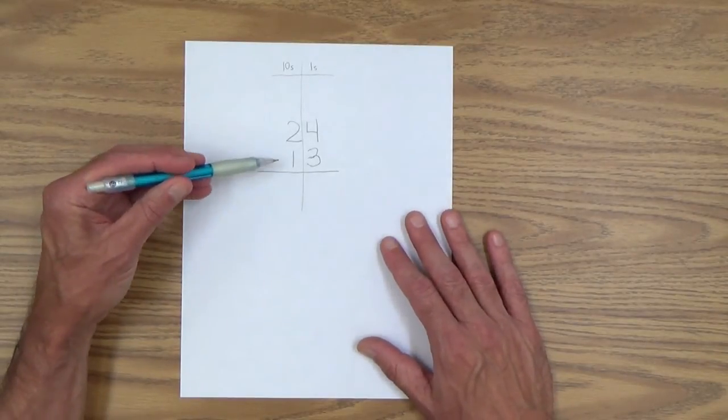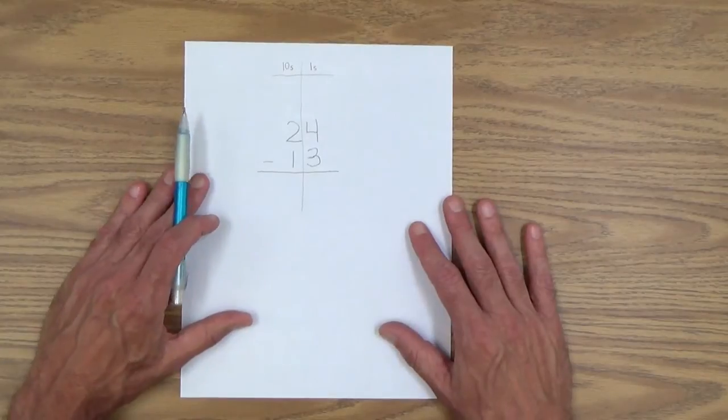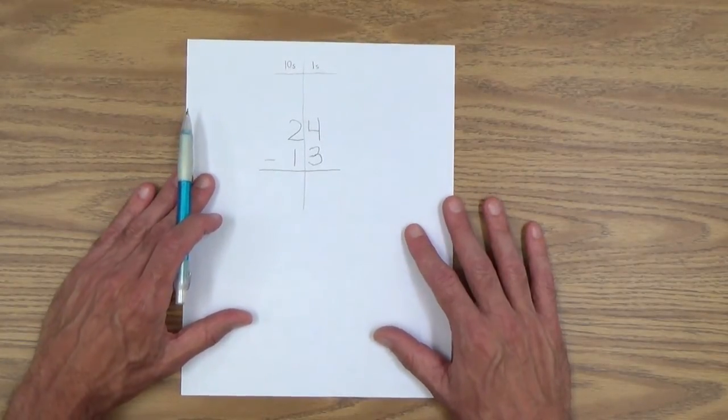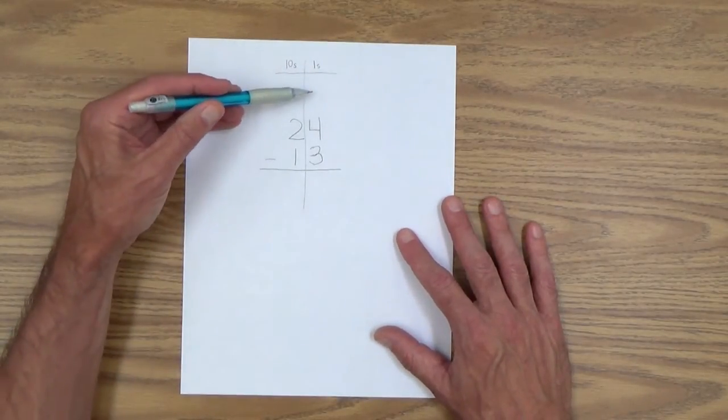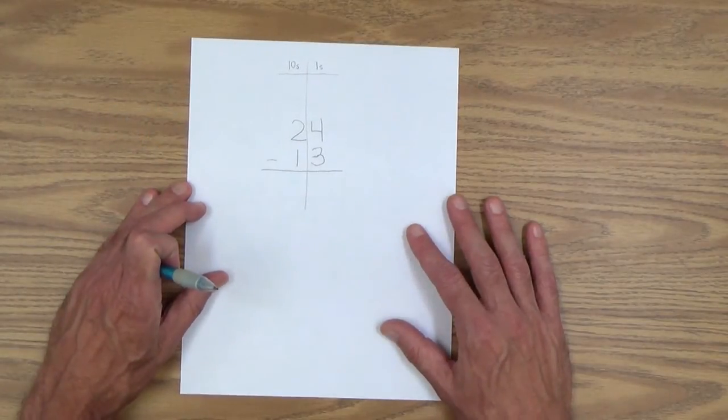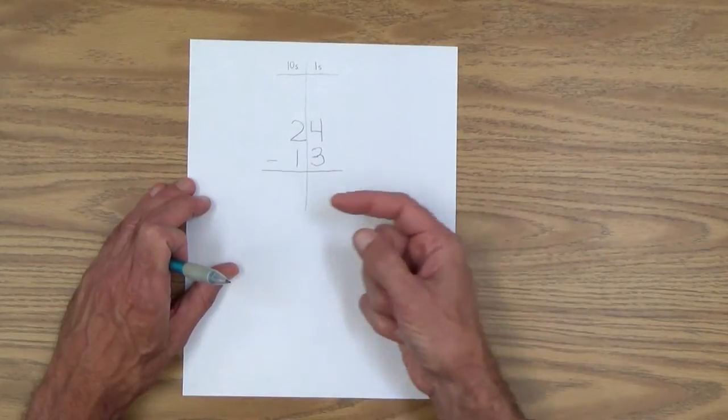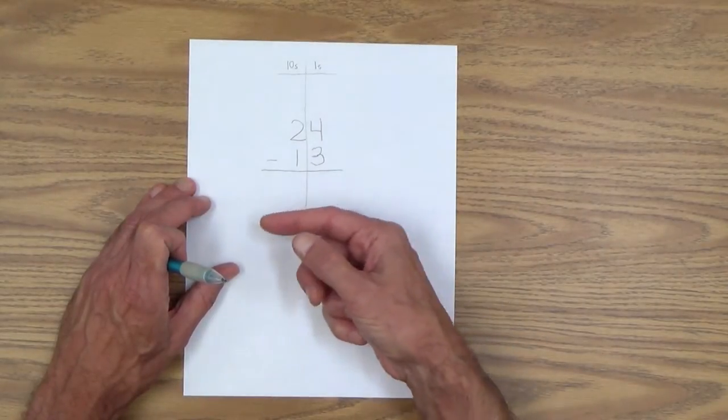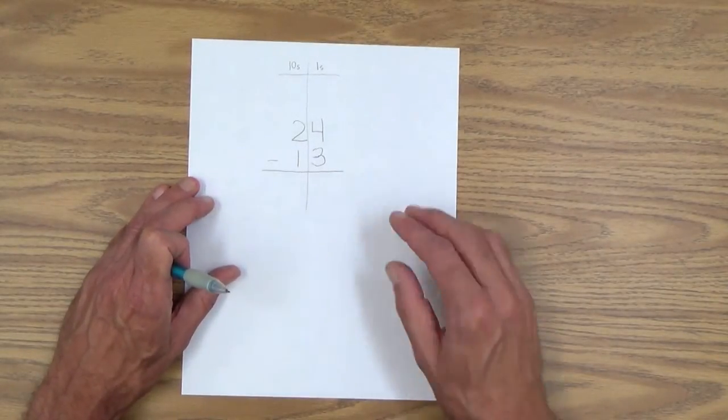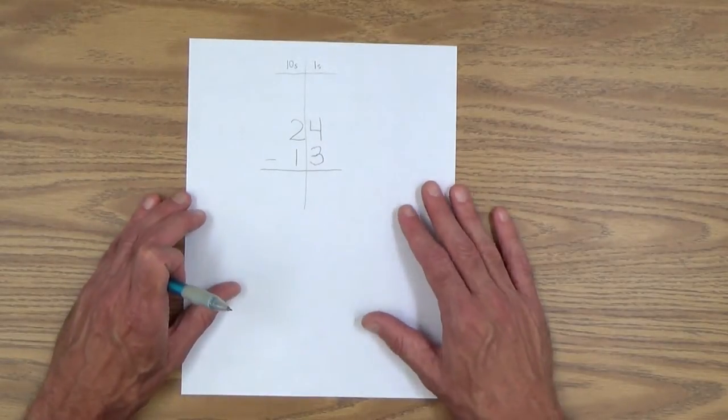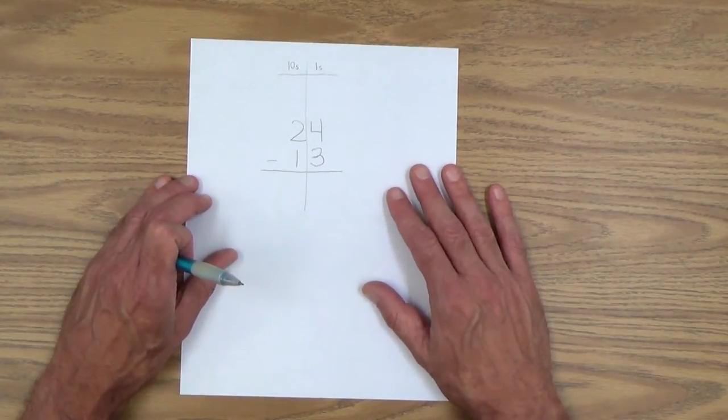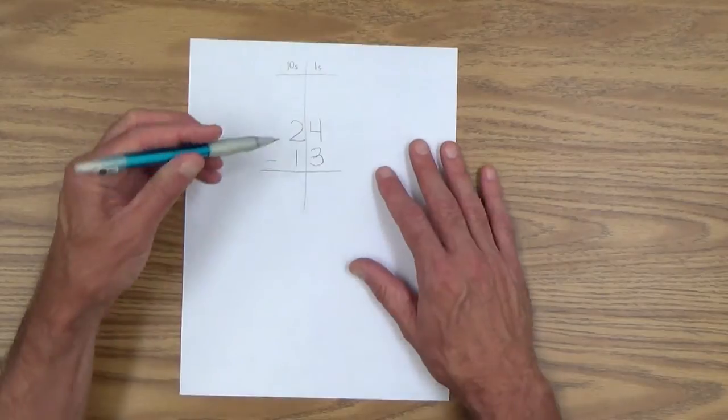So from this point, you can say, well, let's start out by working with the numbers in the ones column, because he already knows that when it comes to addition and subtraction, we work this way, right to left, which is a little different than some of the other things he's done in arithmetic.